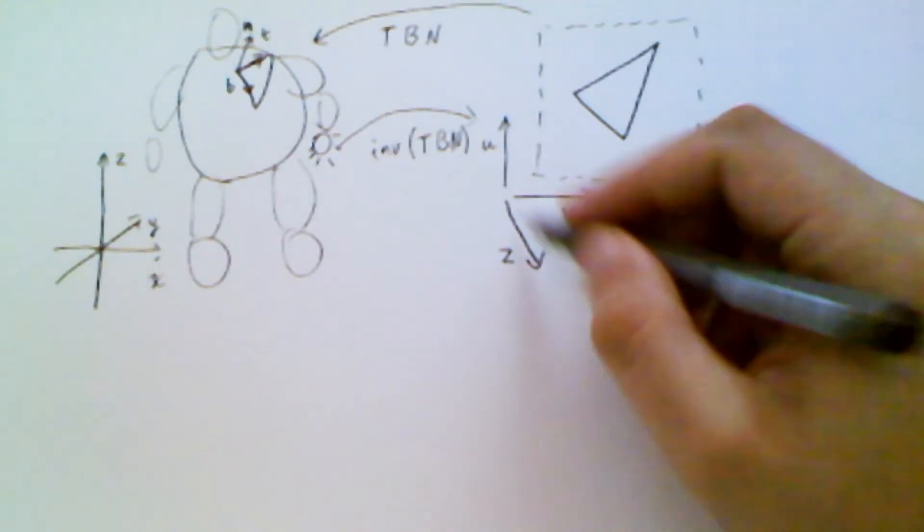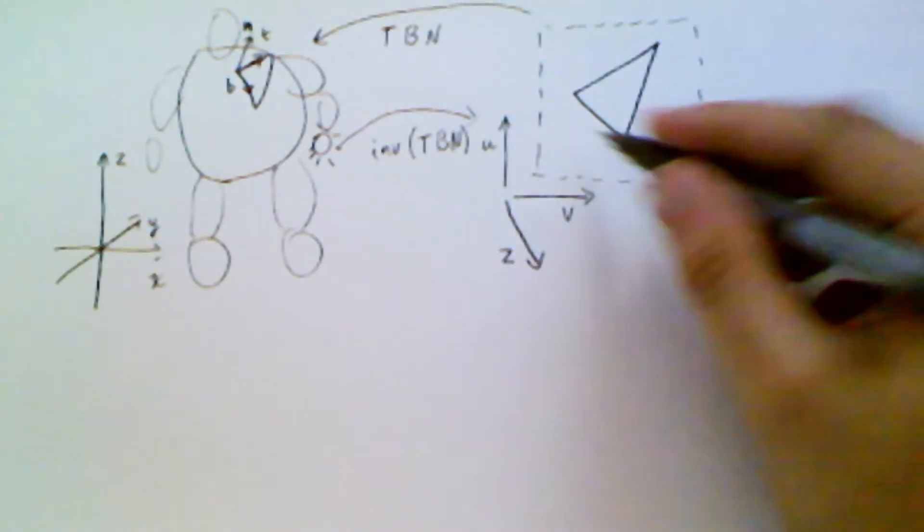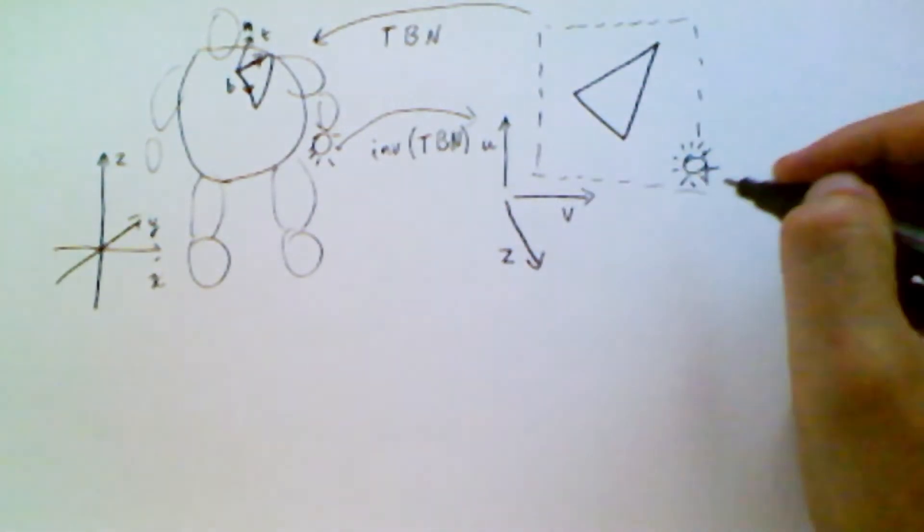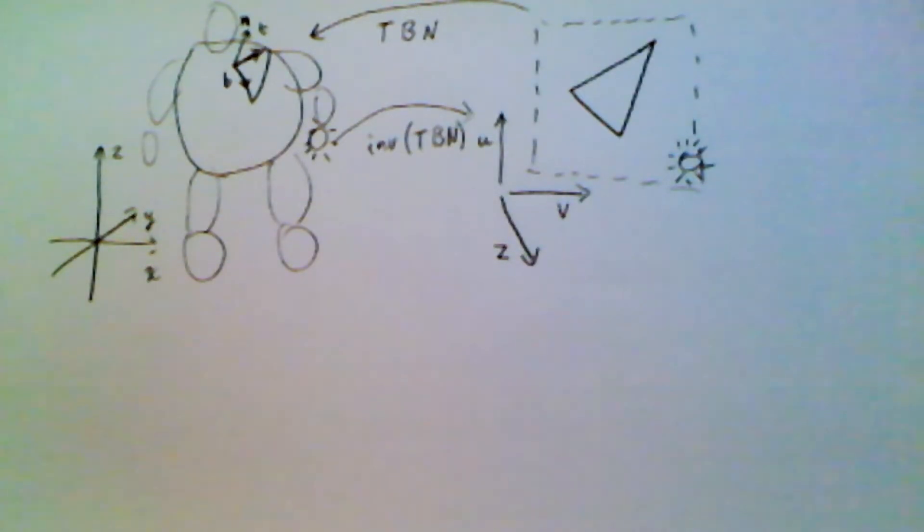The Z axis is already understood to be pointing back, and we don't need to transform the normal map at all. What we do is the normal map remains fixed and the world kind of spins around the normal map. Okay. So that's all well and good.